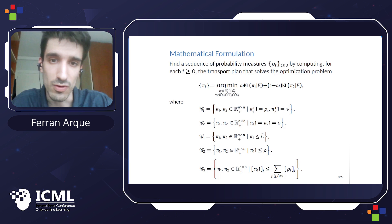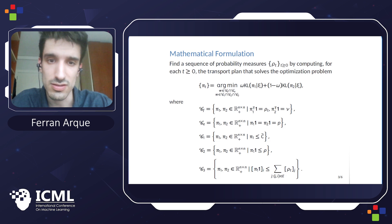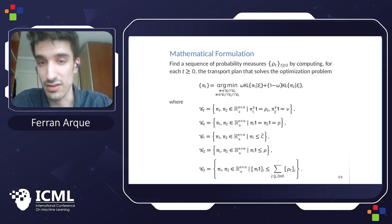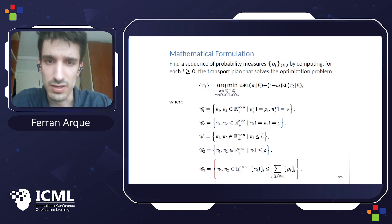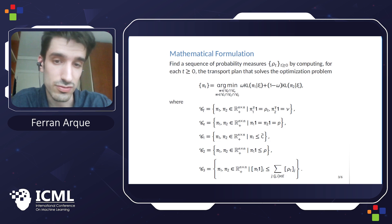With this, we can write a mathematical formulation for our problem. At each step, we want to find an intermediate probability measure that minimizes both the Wasserstein distance between itself and the previous distribution, and also minimizes the Wasserstein distance between itself and the final distribution. We also have the weight parameter omega, which can be modified to give preference to one measure or the other, and this is in fact what is called a Wasserstein barycenter, but we also have the additional constraints.